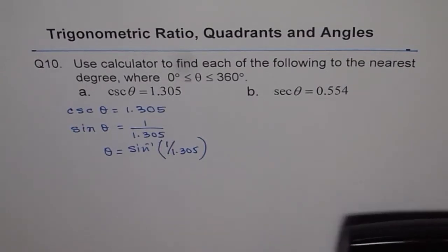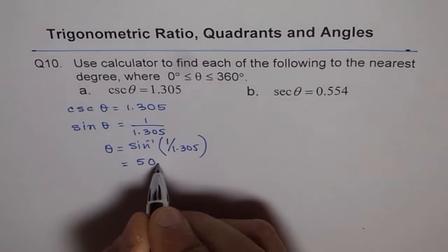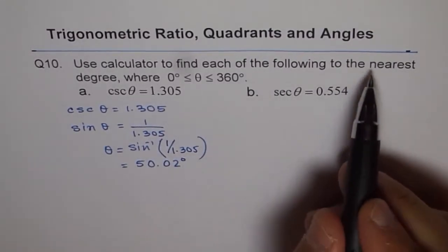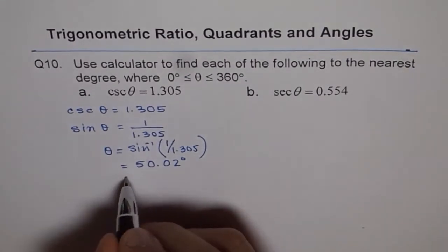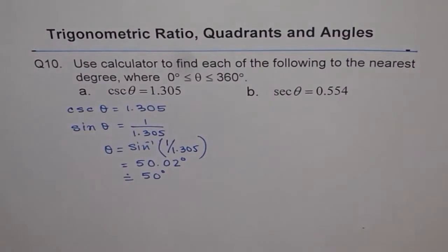So we get 50.02. So we get theta equals 50.02 degrees. So it says nearest degree. So we'll round it and we'll write this to 50 degrees. So that is how it is to be done. I hope you understand it.